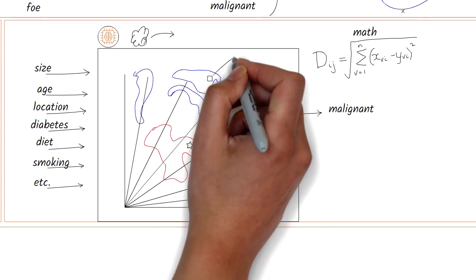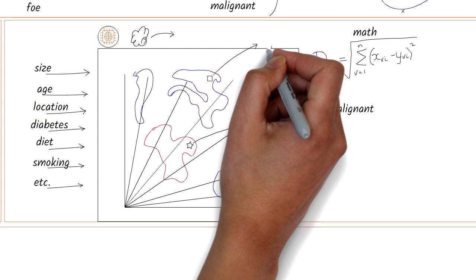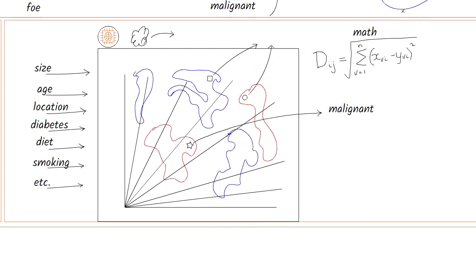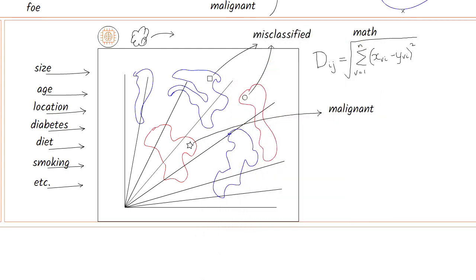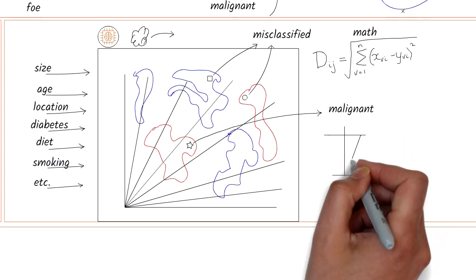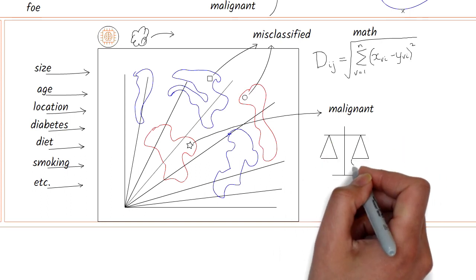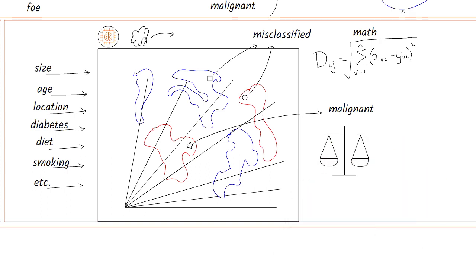But if a patient was misdiagnosed as having a malignant condition when they did not, or not having one when they actually did, both of these are bad outcomes. The hospital doing the diagnosis will be asked to explain the diagnosis — oftentimes in court — potentially resulting in million-dollar lawsuits.